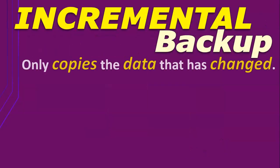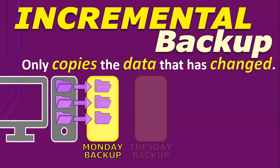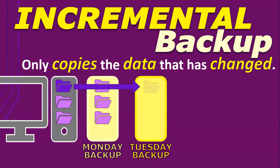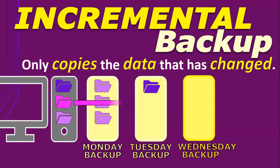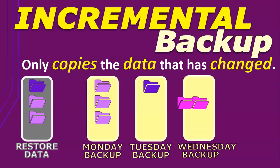An incremental backup only copies the data that has changed since the last backup of any type. Basically, it copies everything the first time you make a backup. But on the second time, it will only back up the files that were changed or new files that have been added. Then the third backup will only include the new files and changes made since the second backup. This makes it faster and requires less storage space, but restoring your data can be more complicated because you need to piece together the data from the full backup and all the incremental backups.